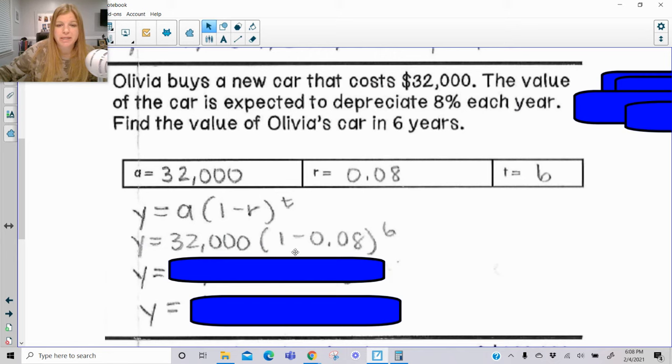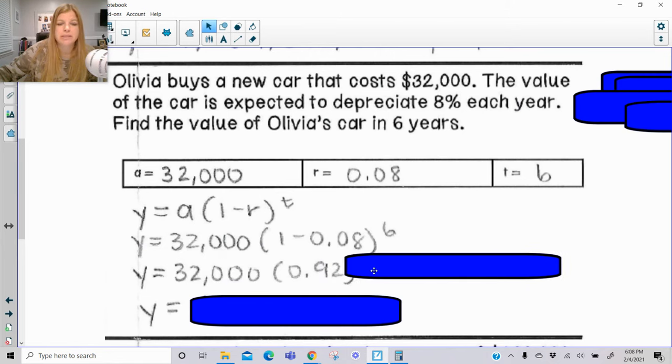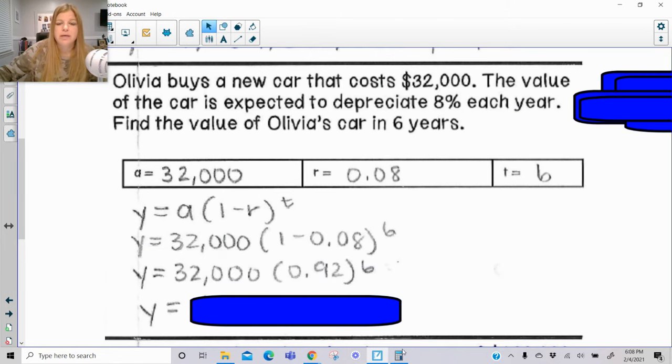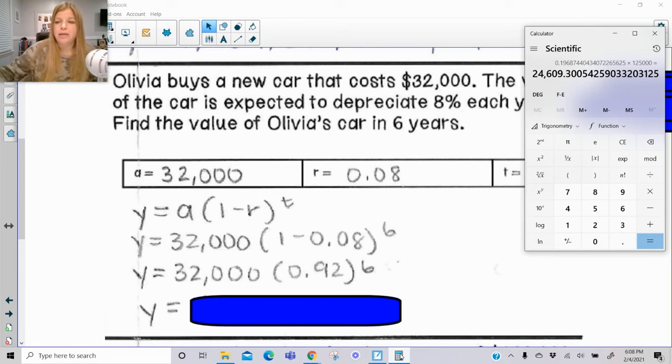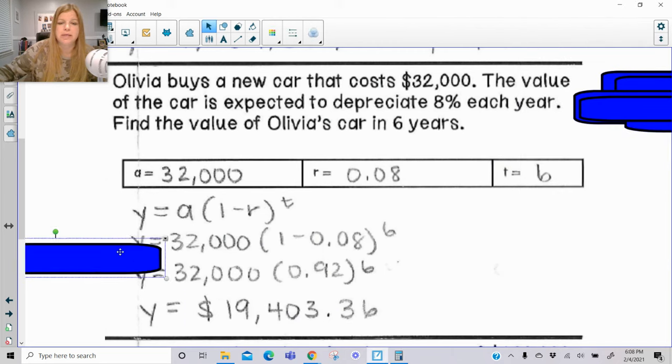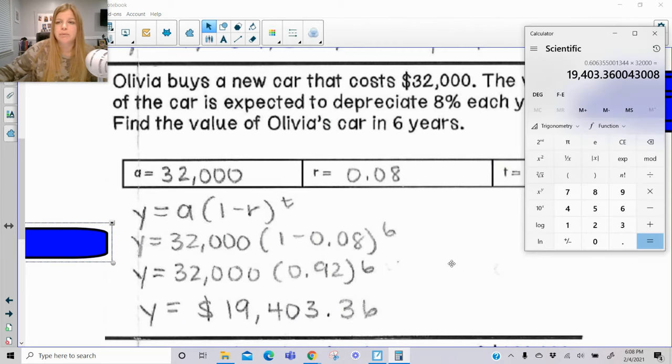This, again, remember, is like 1 minus 8 cents, $1 minus 8 cents, so it's 92 cents. And then again, calculator, and I cannot stress enough, I hope you're typing this in your calculator along with me. You would do 0.92, X to the Y, 6. Keep it fresh in your calculator, times $32,000, and I get $19,403.36, which is exactly what I have here.